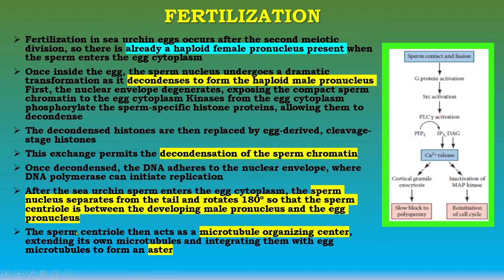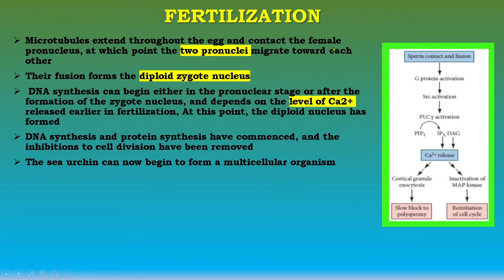Once decondensed, the DNA adheres to the nuclear envelope where DNA polymerase can initiate replication. After the sea urchin sperm enters the egg cytoplasm, the sperm nucleus separates from the tail and rotates 180 degrees so that the sperm centriole is between the developing male pronucleus and the egg pronucleus. The sperm centriole acts as a microtubule organizing center, extending microtubules and integrating them with egg microtubules to form an aster. Microtubules extend throughout the egg and contact the female pronucleus, at which point the two pronuclei migrate towards each other; their fusion forms the diploid zygote nucleus. DNA synthesis can begin either in the pronuclear stage or after zygote nucleus formation. At this point, the diploid nucleus has formed, DNA and protein synthesis have commenced, and inhibitions to cell division have been removed — the sea urchin can now begin to form a multicellular organism.